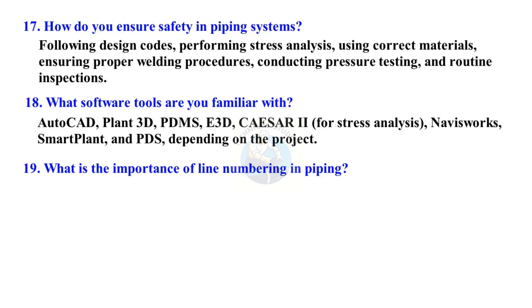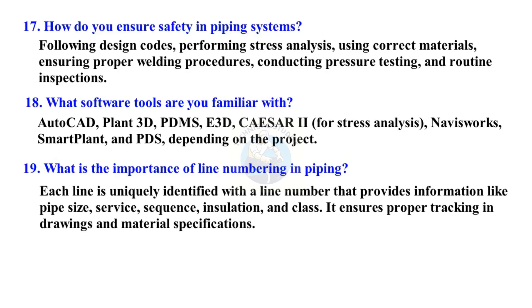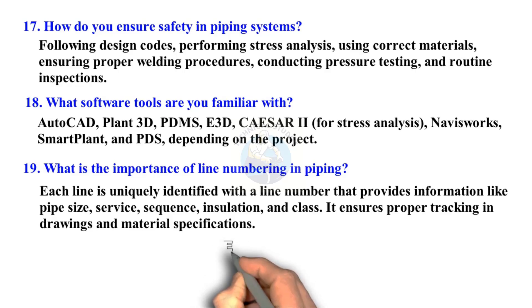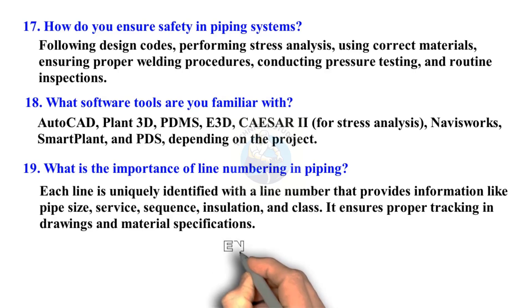What is the importance of line numbering in piping? Each line is uniquely identified with a line number that provides information like pipe size, service, sequence, insulation, and class. It ensures proper tracking in drawings and material specifications. Thank you for watching.